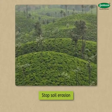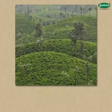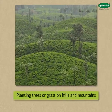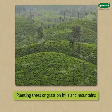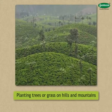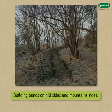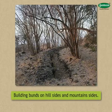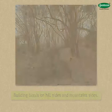We can stop soil erosion by planting trees or grass on hills and mountains, and by building bunds on hillsides and mountainsides.